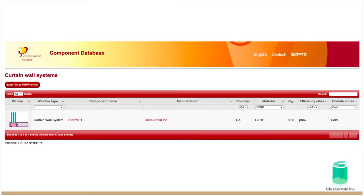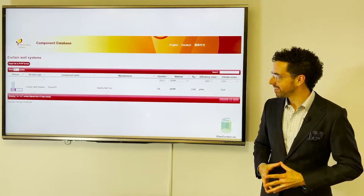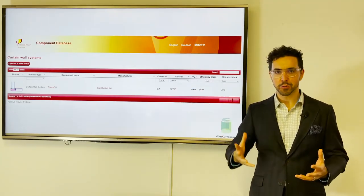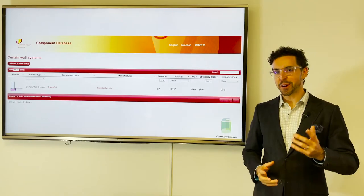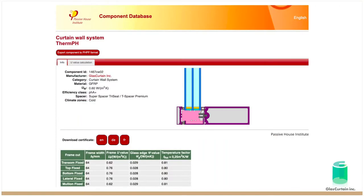And so if you filter for cold climate curtain wall systems, you get one result: Glass Curtain, Therm pH, Therm pH Plus, not sure where the plus went, but the plus is there. And so why don't we take a look at this certificate to sort of see what the official document looks like.